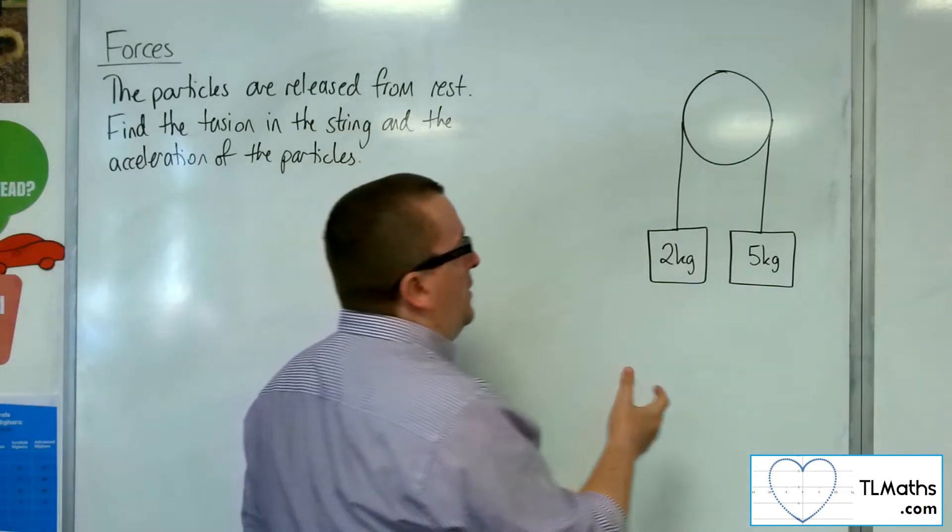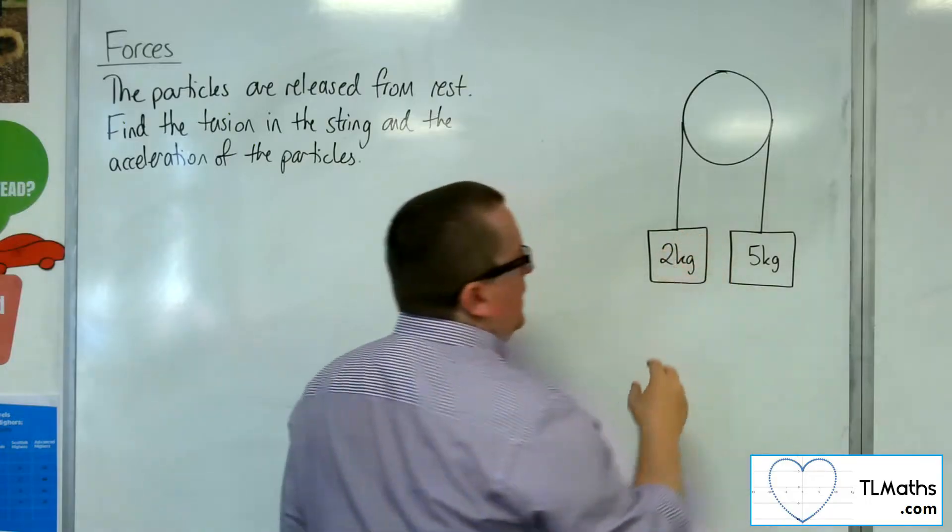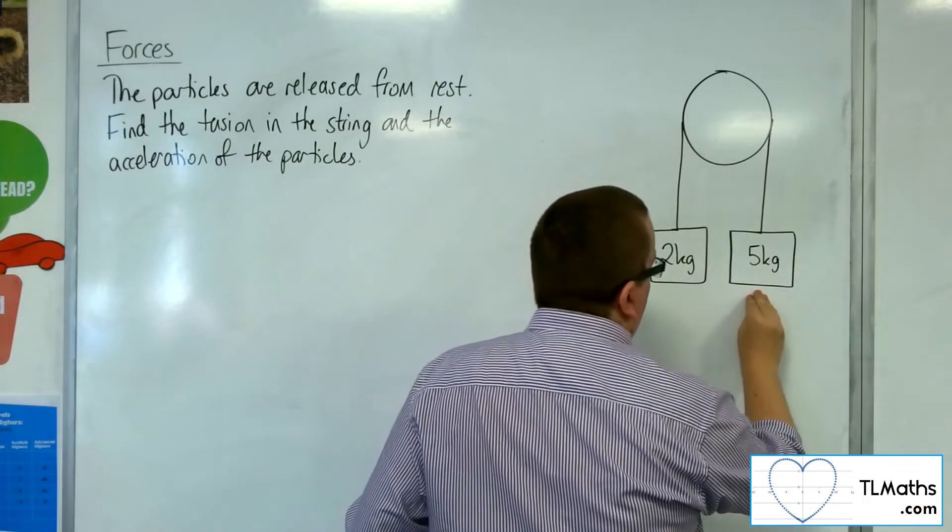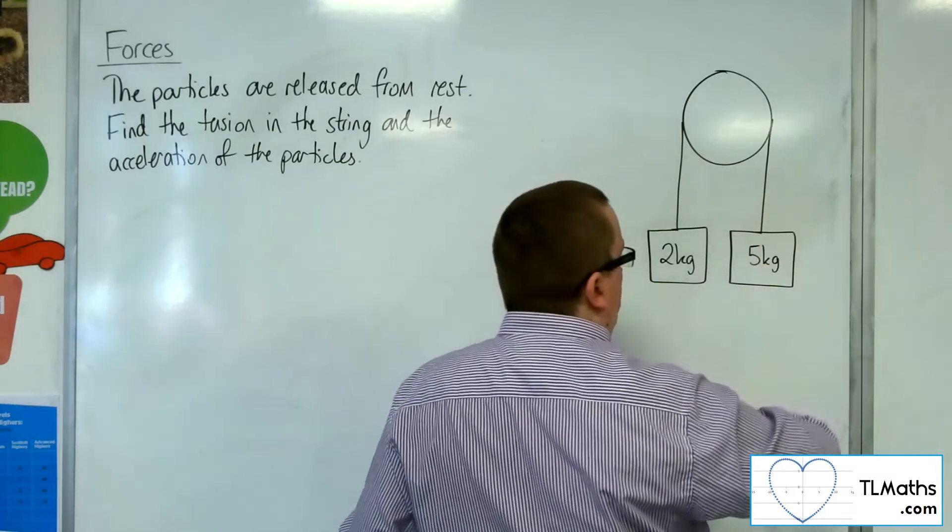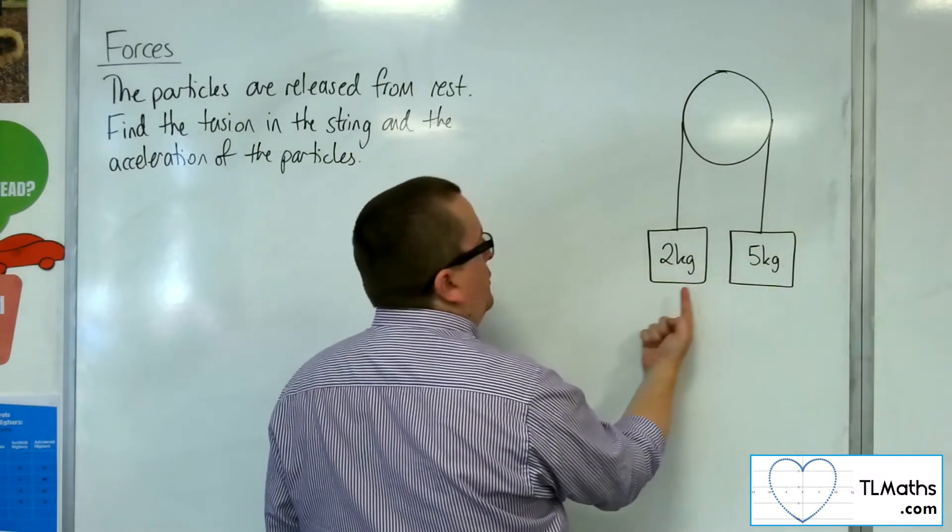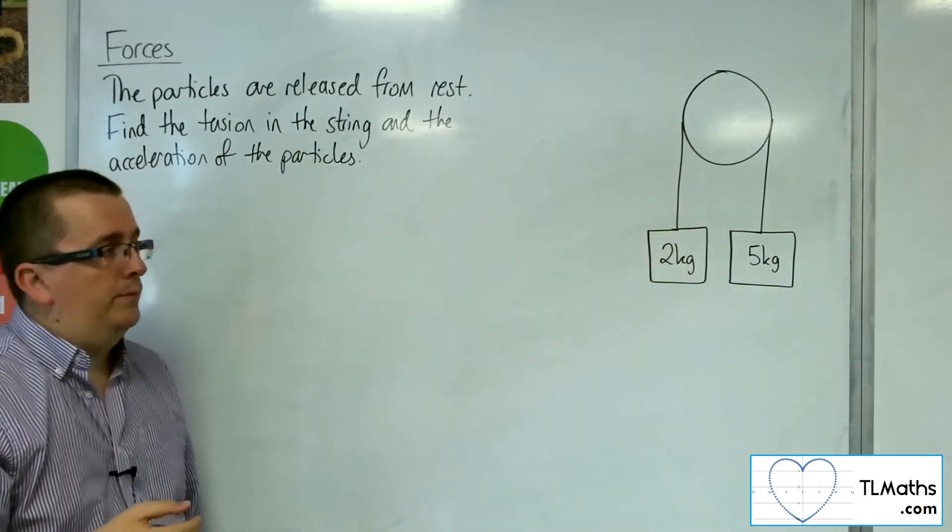Now because the mass of this particle is greater than that one, this one will have a greater weight. In which case, that means this one is going to drop down and that's going to in turn bring the two kilogram particle racing upwards.